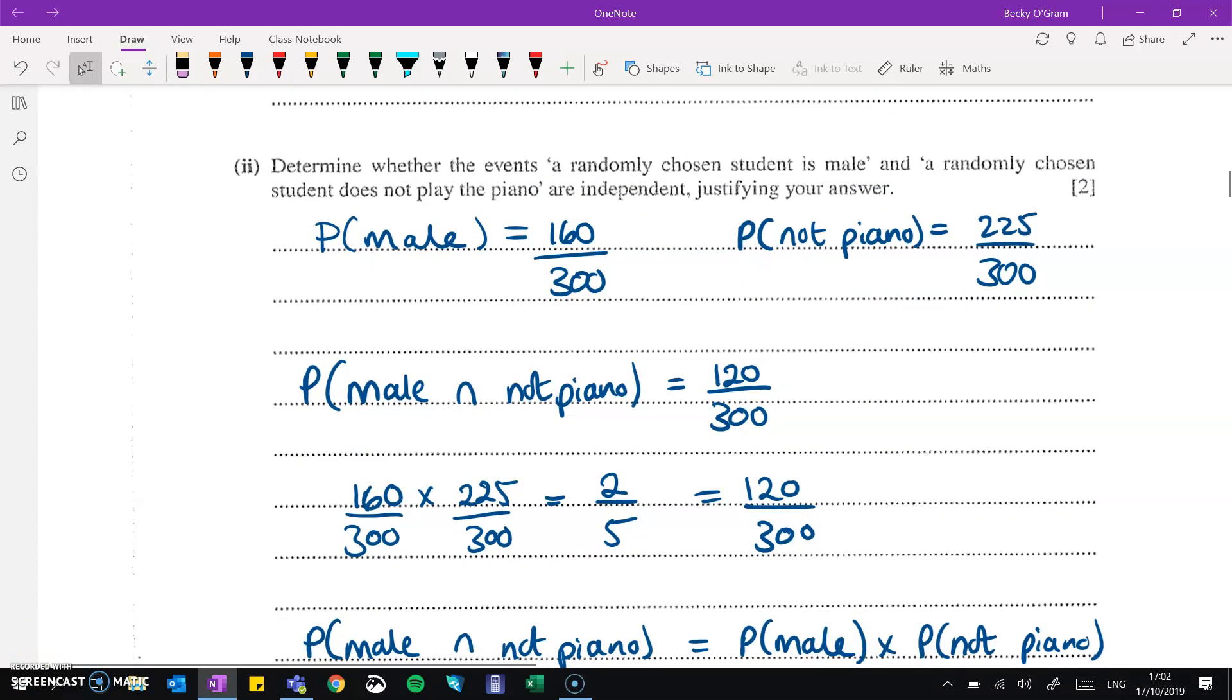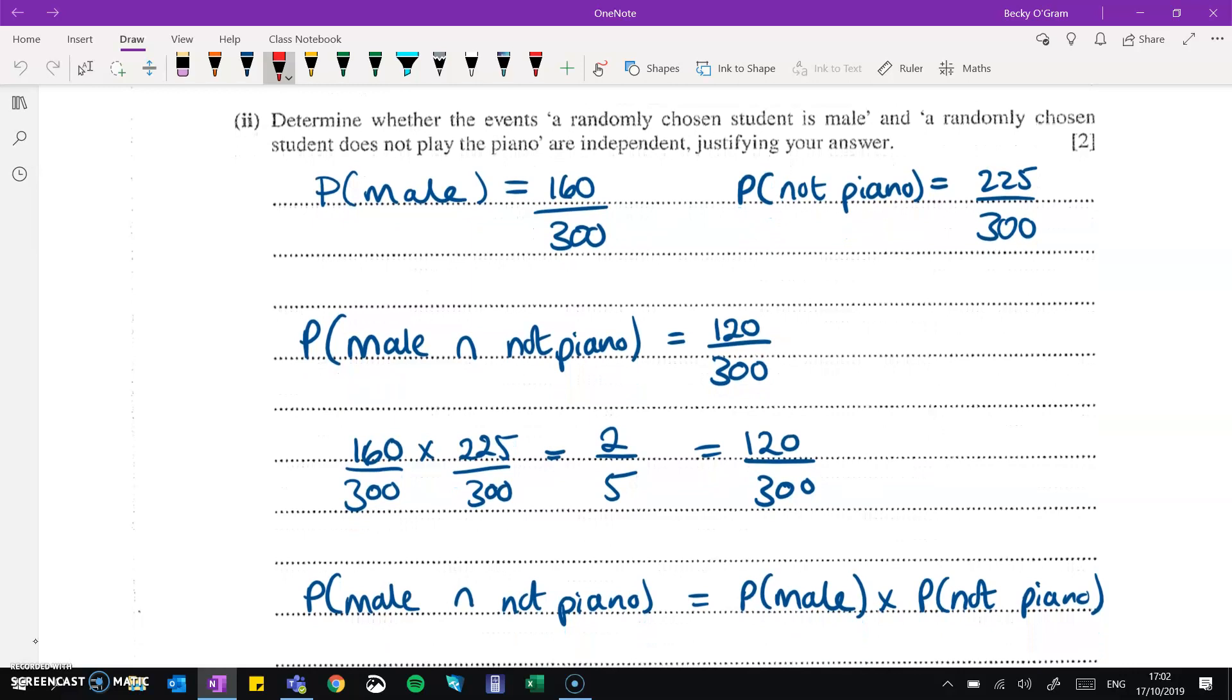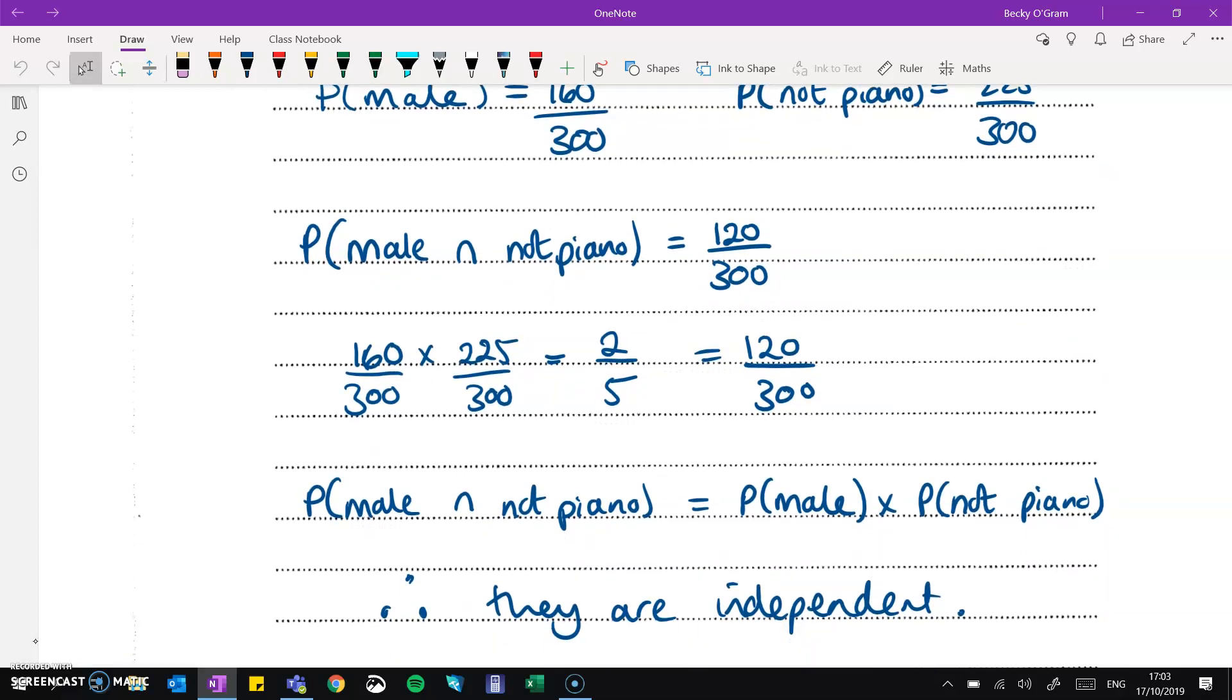Part two is to determine whether the events randomly chosen student is male and randomly chosen student doesn't play the piano are independent. Now, if they are independent, we can find the probability of each of them and multiply them together and we'll get the same as if we worked out the probability of both of them. So the probability of each of them reading off of that table from above is we've got 160 males out of 300 and we've got 225 of the students don't play the piano out of the 300. The males and not playing the piano is 120. So now we compare. If we did these two separately and times them together, we get two fifths, which is the same as this one here, the 120 over 300. So therefore, the probability of both things together is equal to the probability of those two things multiplied together. Therefore, they are independent events.